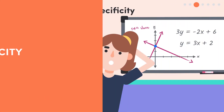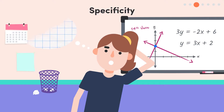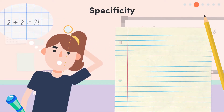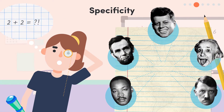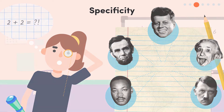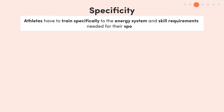Next we have specificity. If you were studying for a maths exam, would you sit down and write a history essay? No, that would be of absolutely no benefit to you. The same goes for sport — athletes have to train specifically to the energy system and skill requirements needed for their sport, and even their position if they play a team sport.